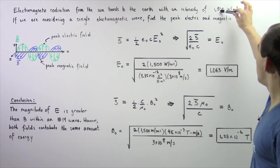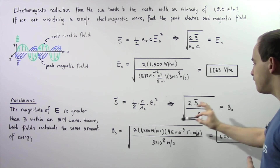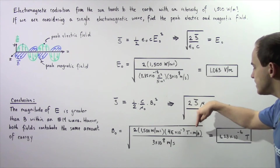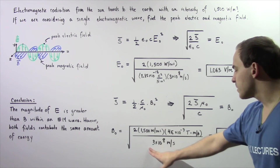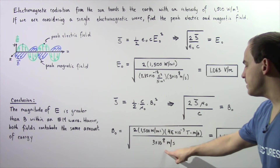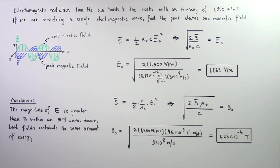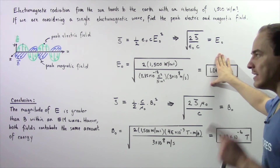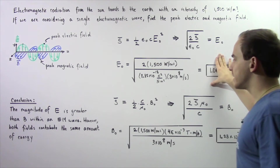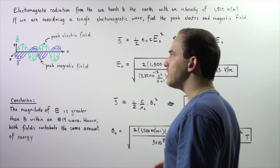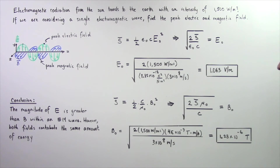Plugging in our values: 2 multiplied by the intensity, multiplied by the constant 4π times 10 to the negative 7 teslas times meters per amp, divided by the speed of light 3 times 10 to the 8 meters per second. We multiply, divide, take the square root, and we get approximately 1.28 times 10 to the negative 6 teslas as the maximum magnetic field of the electromagnetic wave.